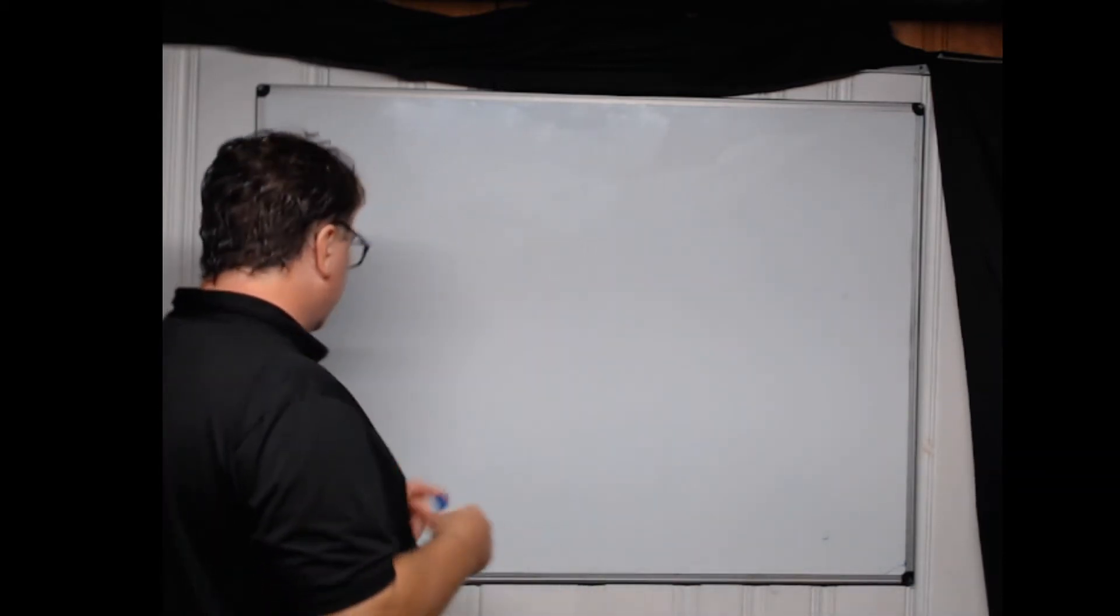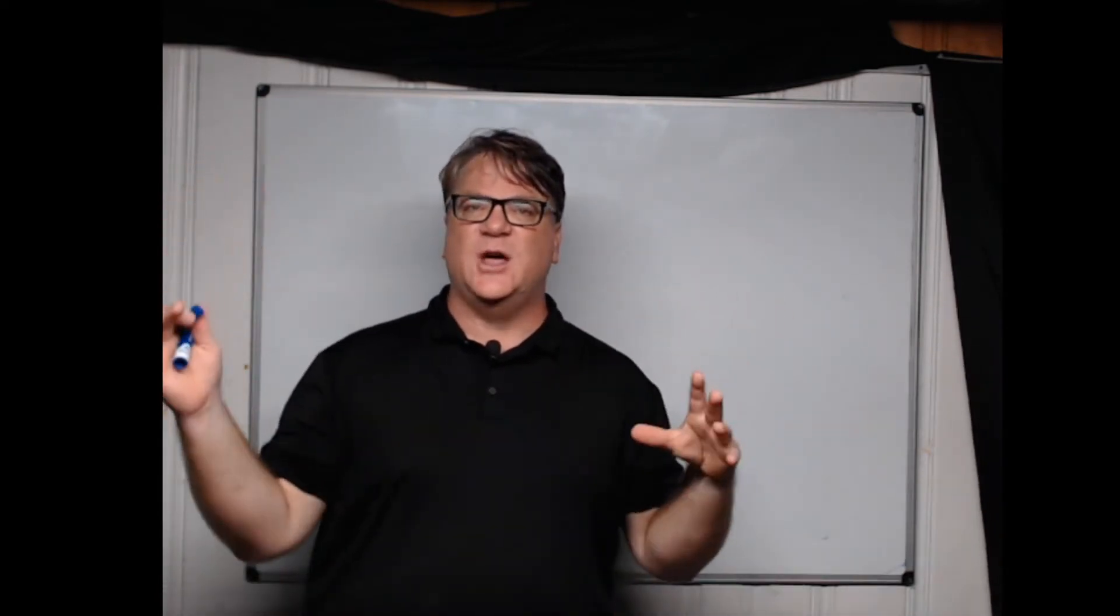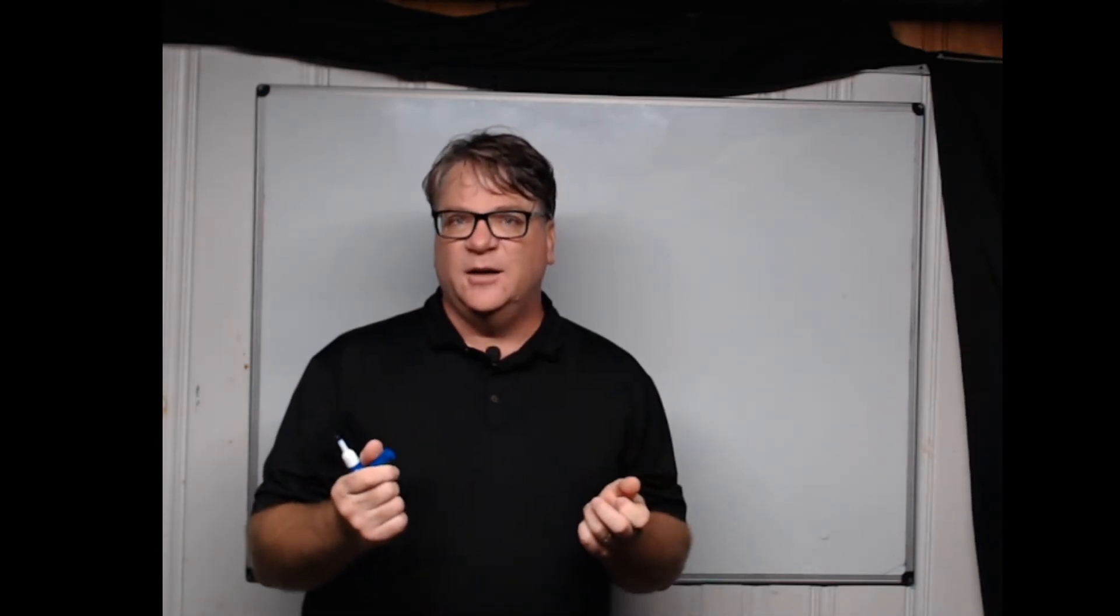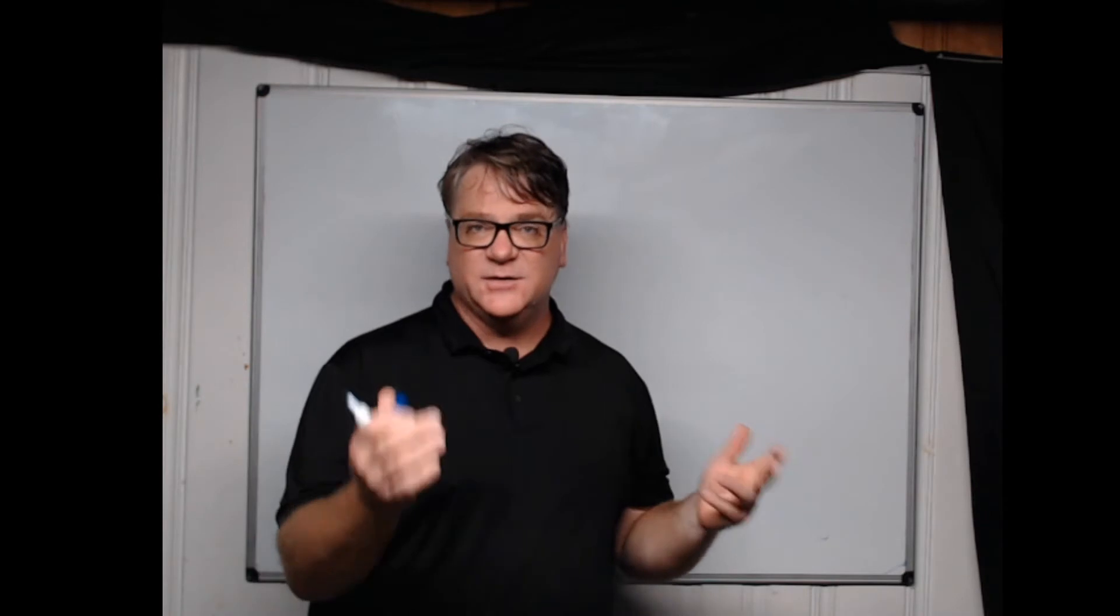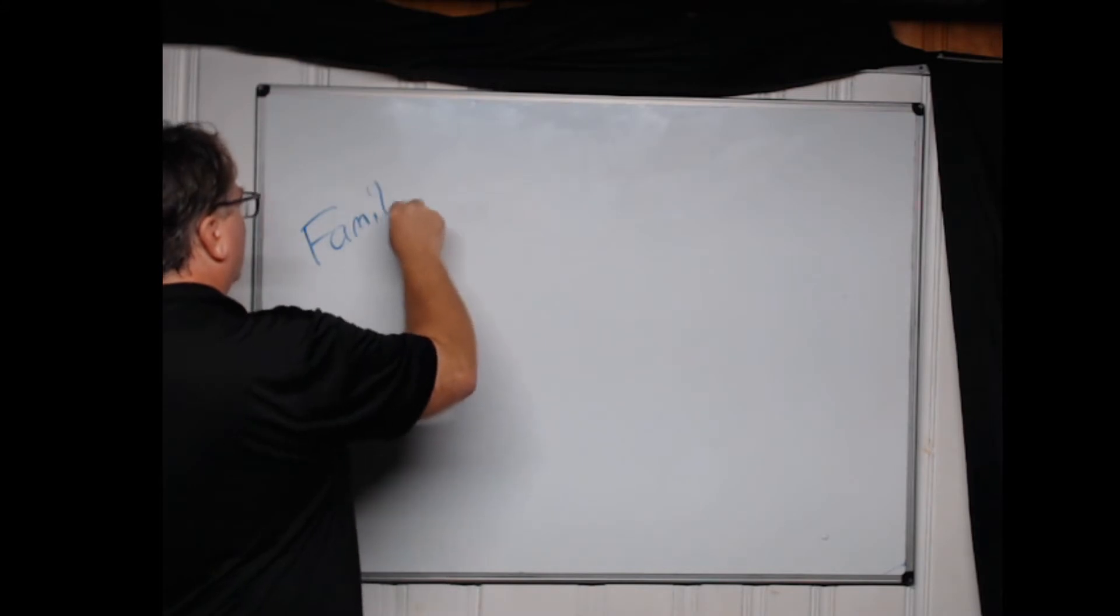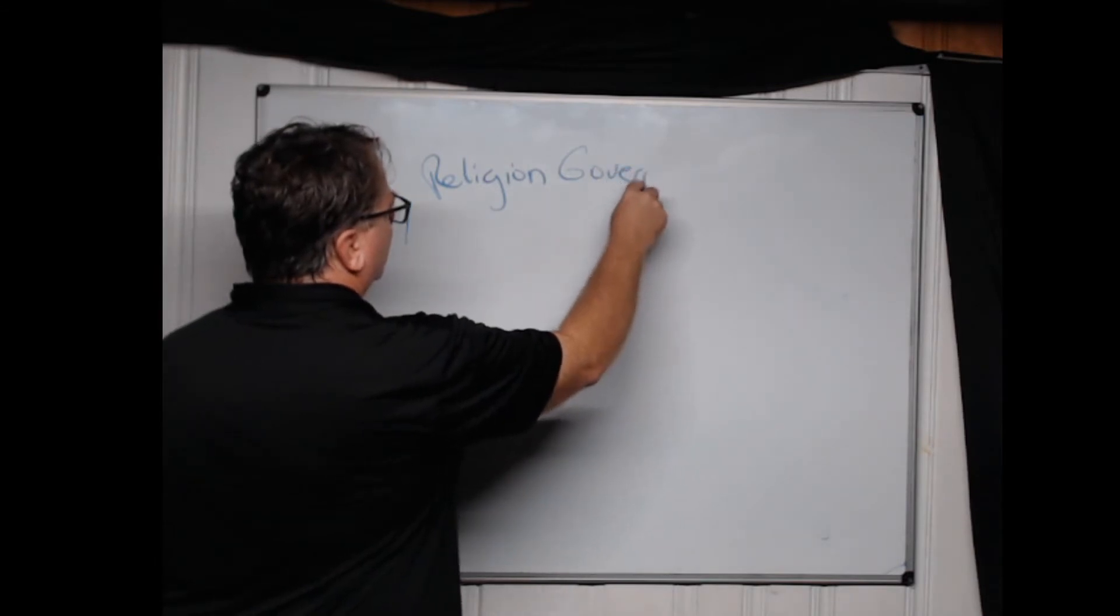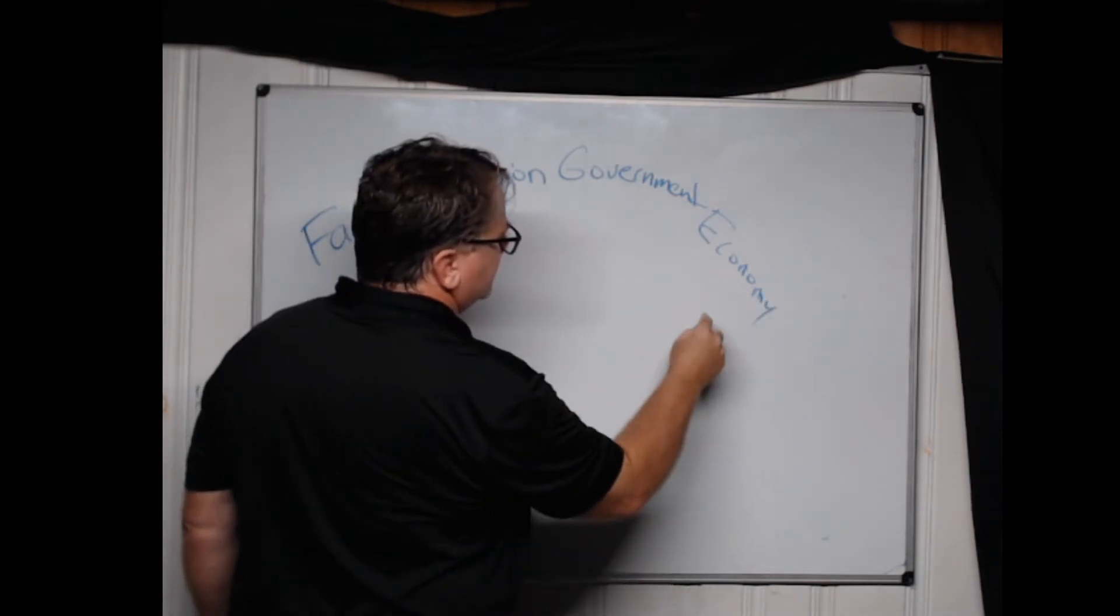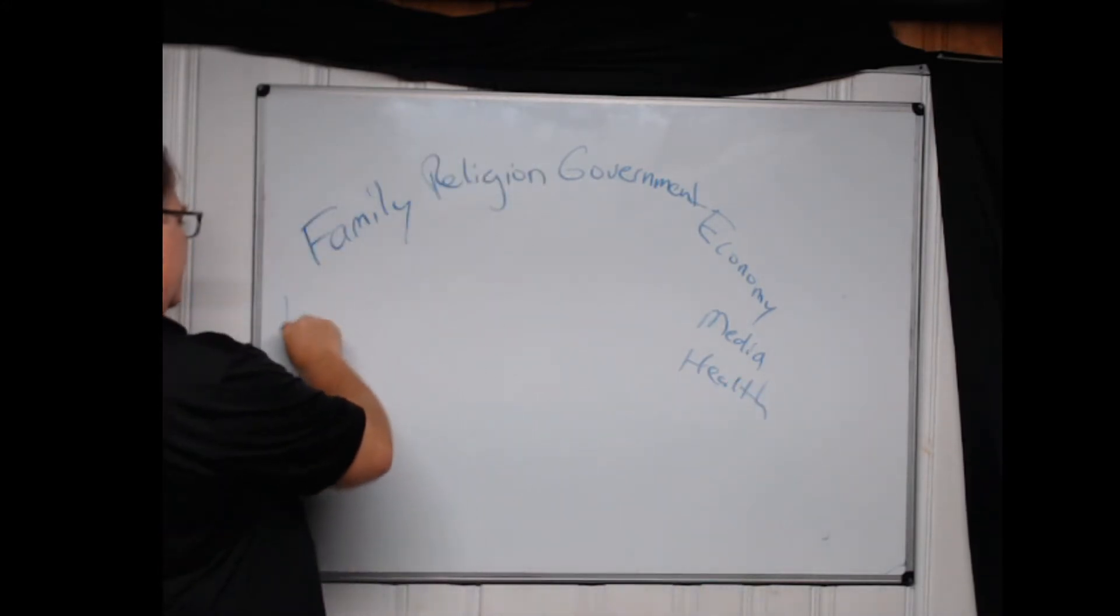So when we think about social institutions, there are some primary social institutions. Now, not all social life is found under these institutions, but these together, individually and together, form to make social structure in modern society. And these social institutions are family, religion, government, the economy, media, health, and education.